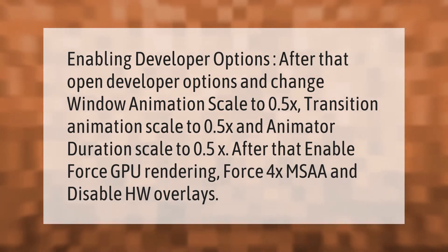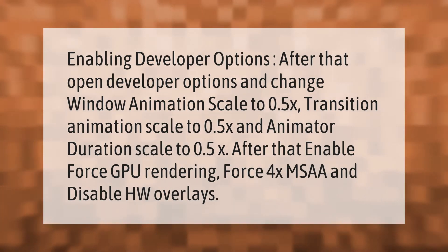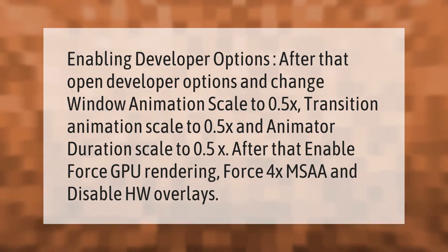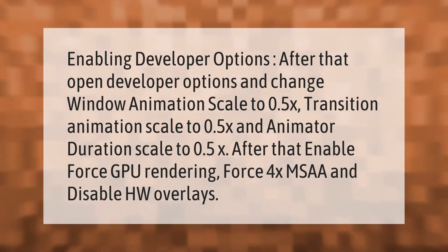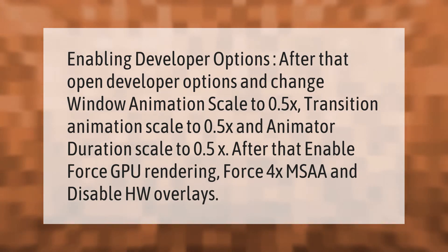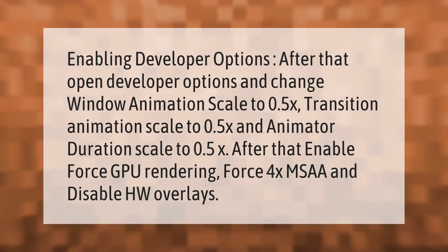After enabling developer options, open developer options and change window animation scale to 0.5x, transition animation scale to 0.5x, and animator duration scale to 0.5x. After that, enable force GPU rendering, force 4x MSAA, and disable HW overlays.